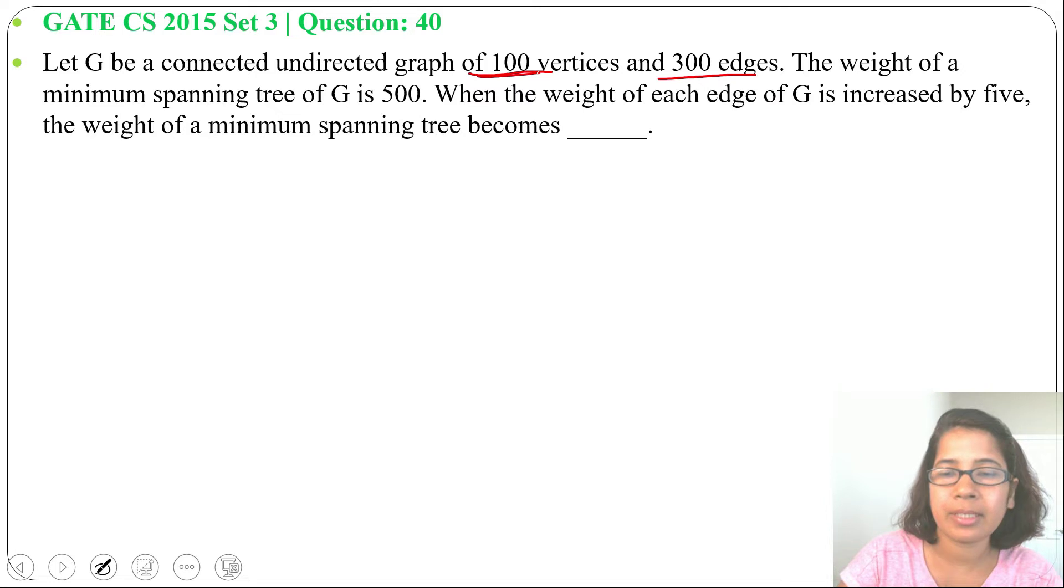So 100 vertices, then in minimum spanning tree there will be 100 minus 1 edges. So in minimum spanning tree, edges will be 100 minus 1, that's 99.